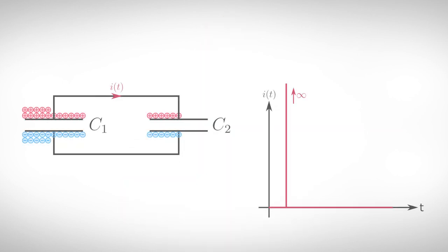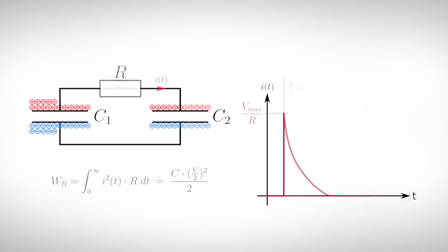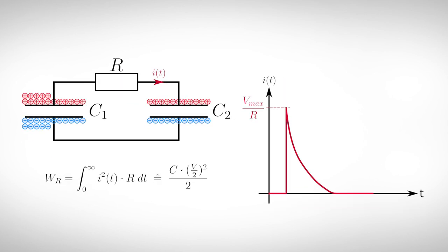In this case, the charging of a capacitor can no longer be described with ideal components alone. If you connect the charged capacitor to an uncharged one, ideally an infinitely high current would flow during the charging process. Of course, this is not possible, so we consider the whole process with a resistor between the capacitors, which limits the current.